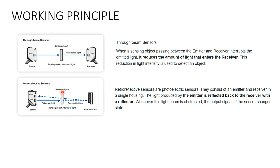When we insert a part in between, the light produced by the emitter would normally be reflected back to the receiver via the reflector. When the light beam is obstructed, the output signal of the sensor changes its state. Initially the receiver is receiving light from the retro reflector, but now it is interrupted, so the signal is sent — and that's how the retro reflective sensor works.